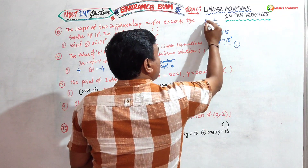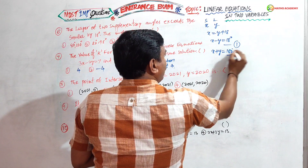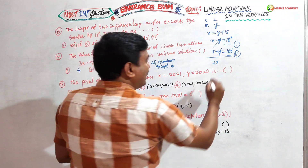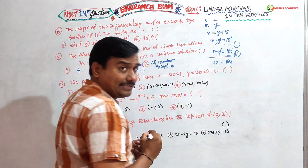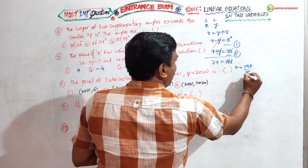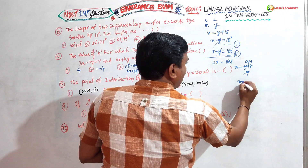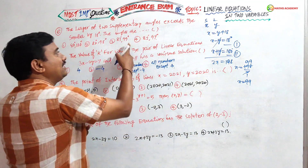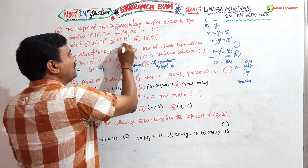Adding equations 1 and 2: y cancels, and we get 2x = 198, so x = 99. So x = 99 degrees. That gives us the smaller angle. The larger angle is 99 + 18 = 117 degrees... but you can identify the answer directly from the options.